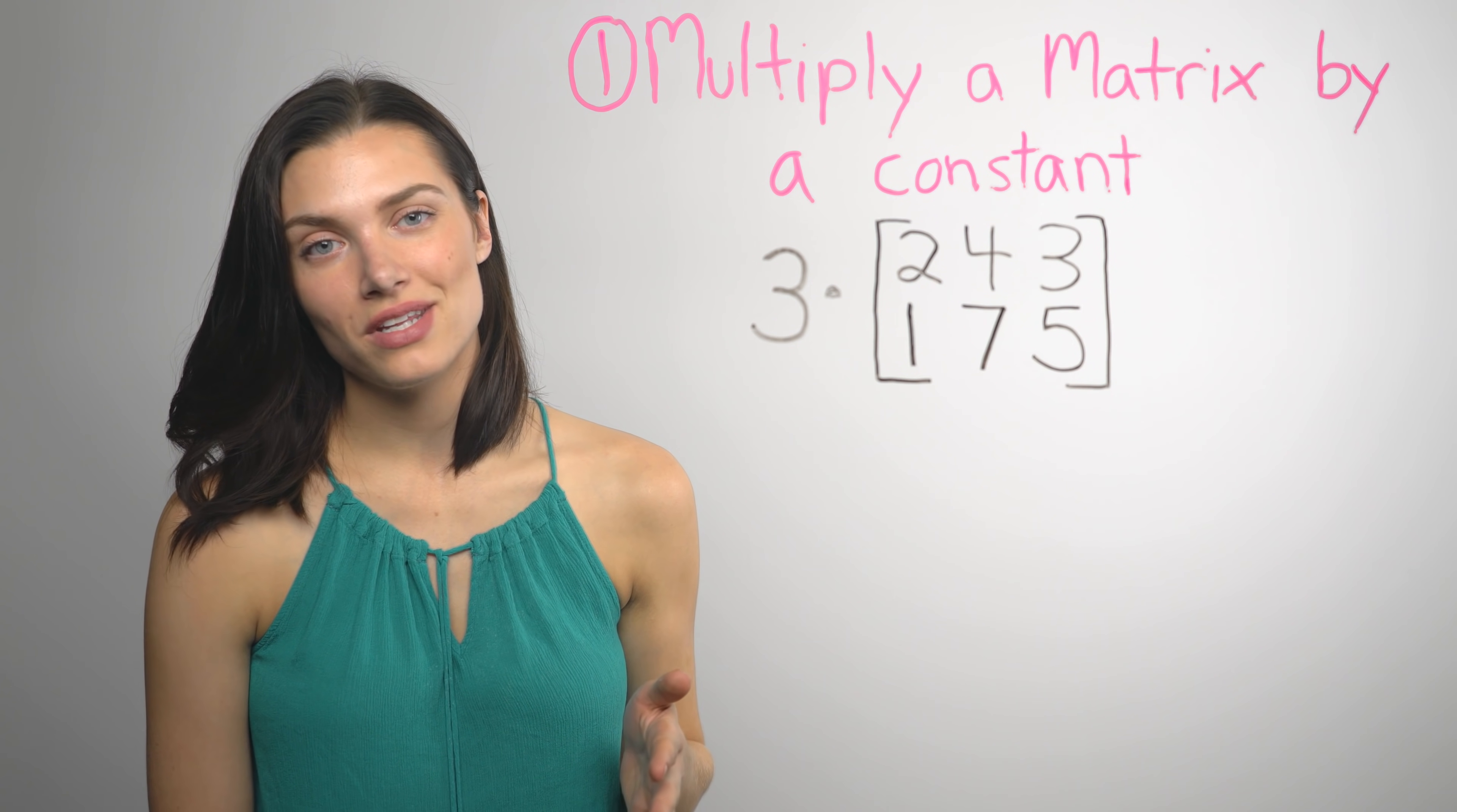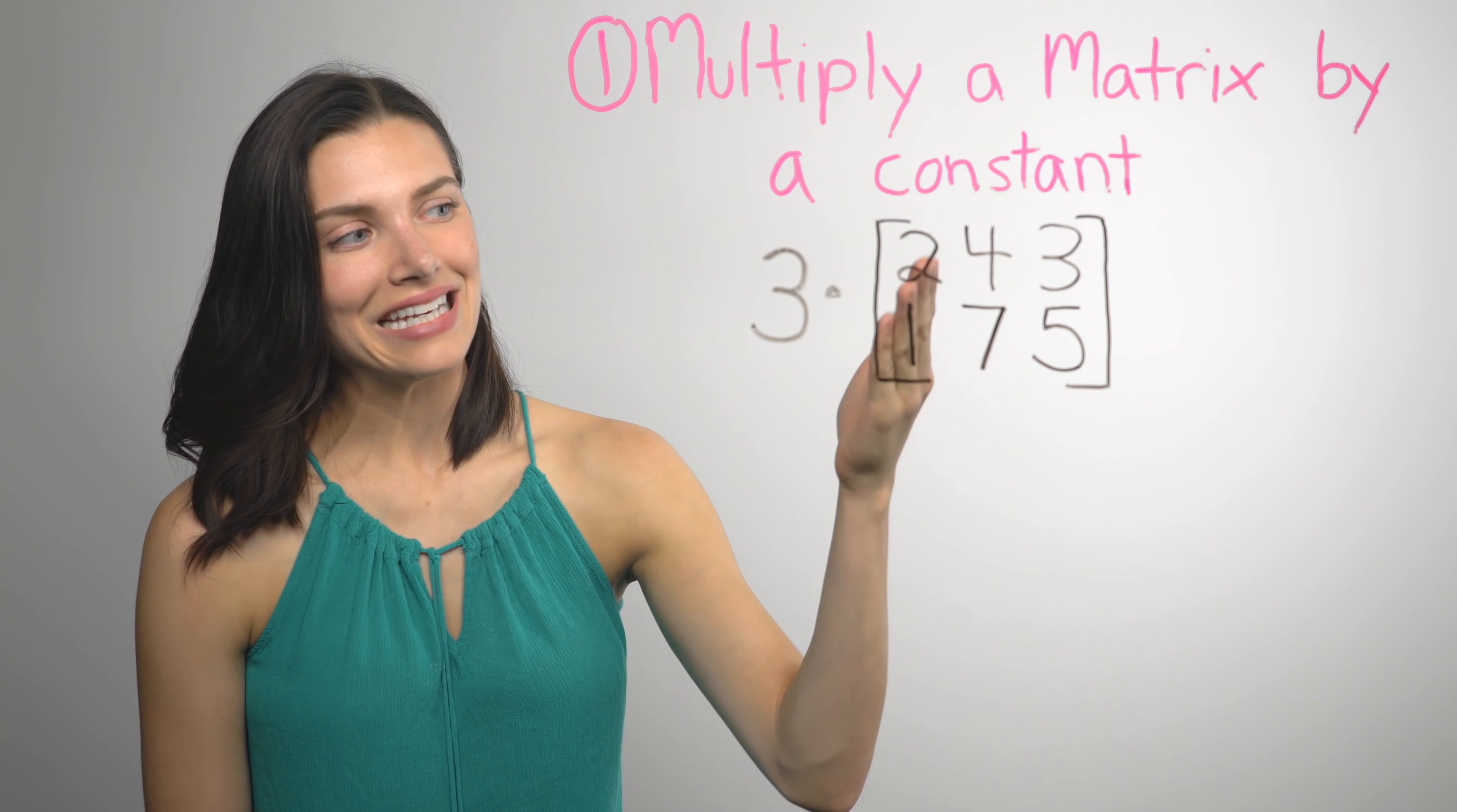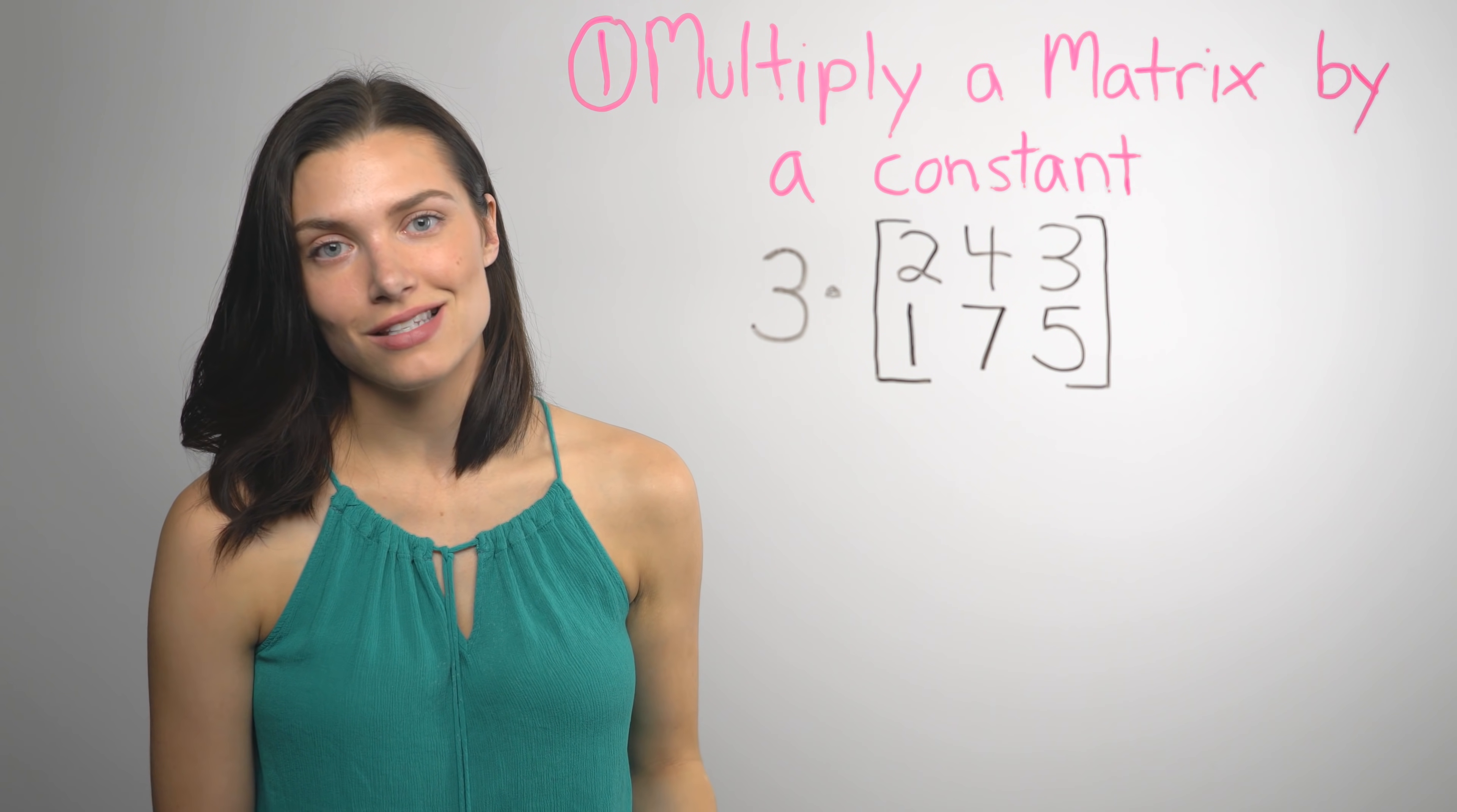So let's not spend a lot of time on this because it's pretty basic. When you multiply a matrix by a constant, you multiply each element in the matrix by the constant, and then you get a new matrix that's the same size as the original one.